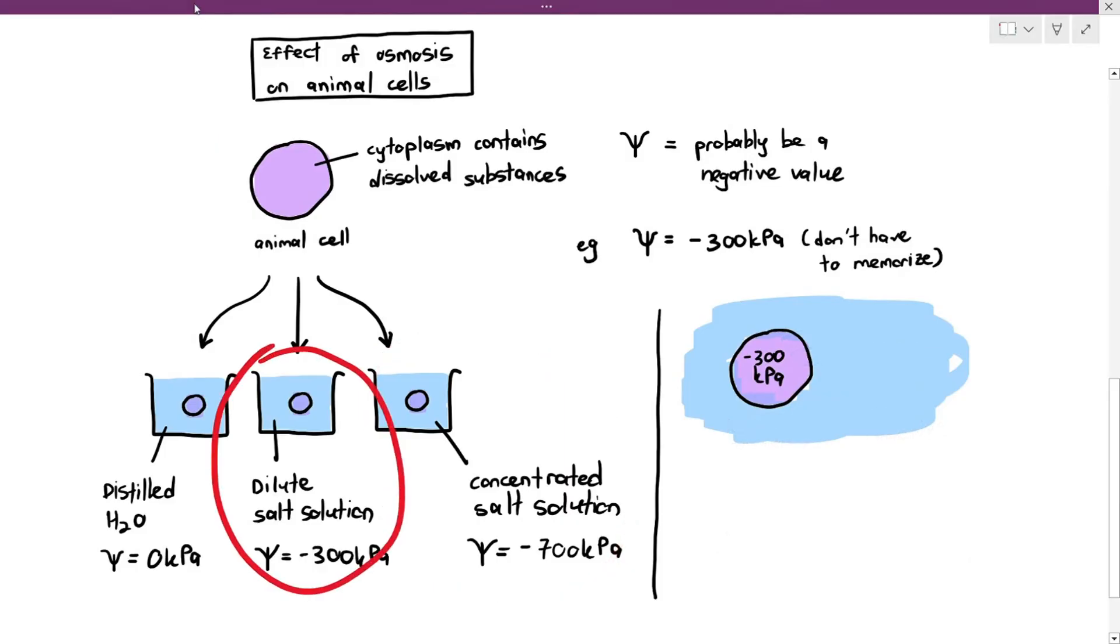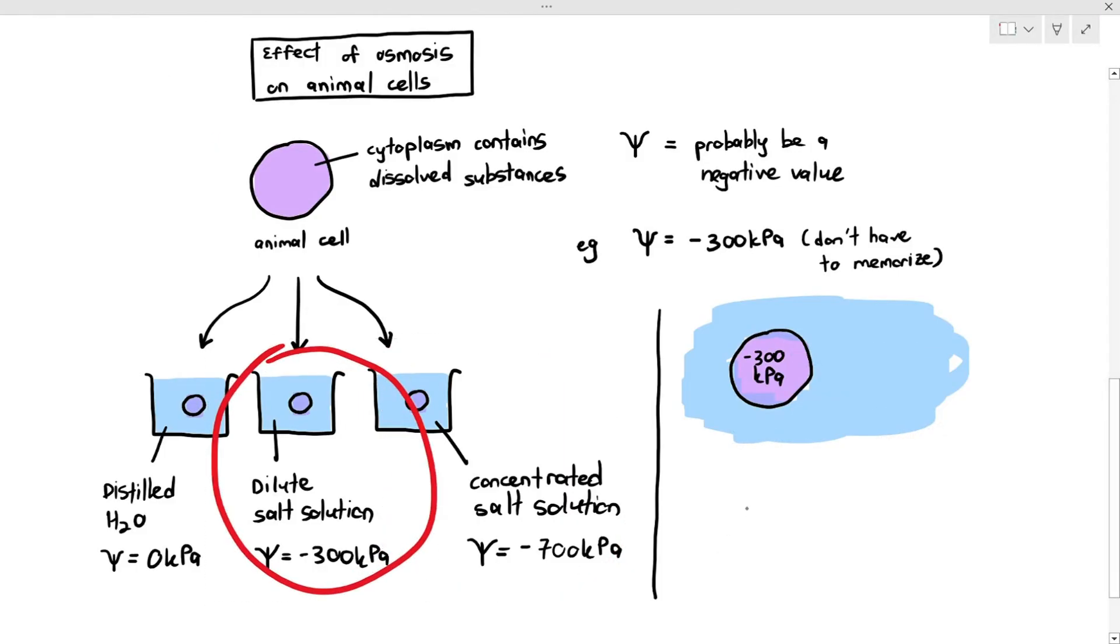If you were to immerse the cell in a dilute salt solution, notice that here, the water potential inside the cell and the water potential outside the cell, which is the salt solution, are equal. So in this case, will osmosis happen?